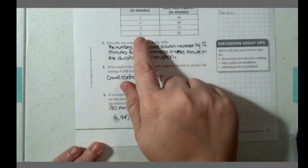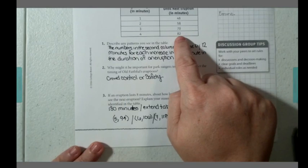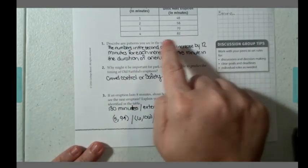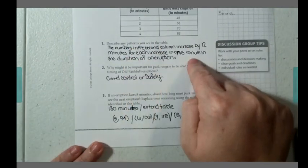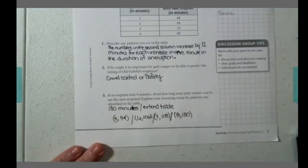If I would have continued the same pattern it would have gone five comma ninety-four, six comma one-oh-six, seven comma one-eighteen, eight comma one-thirty. So I put 130 minutes.